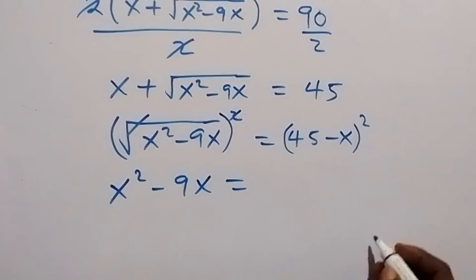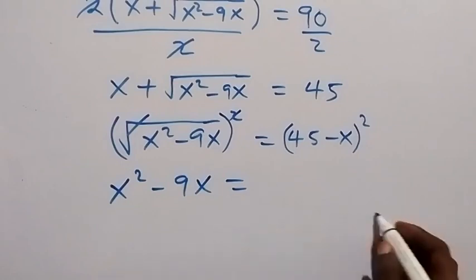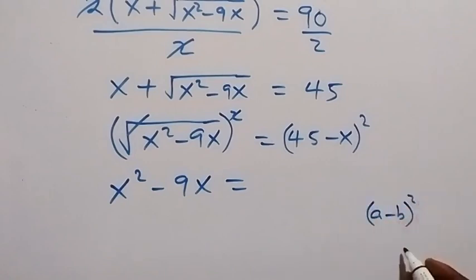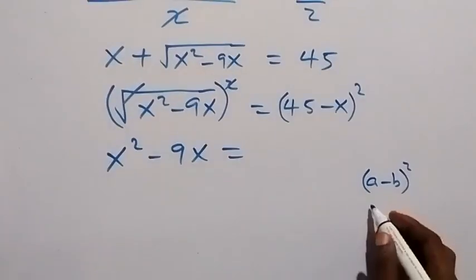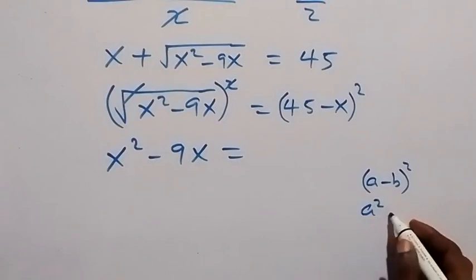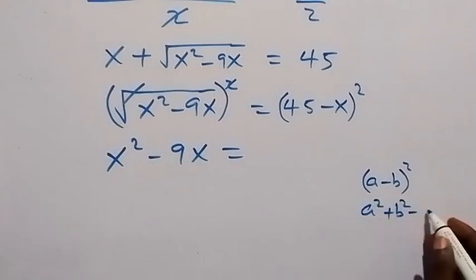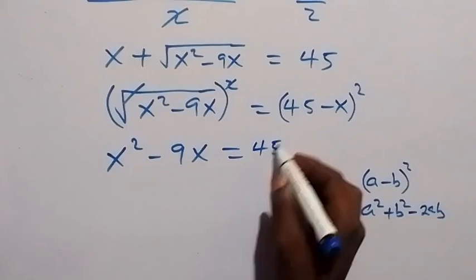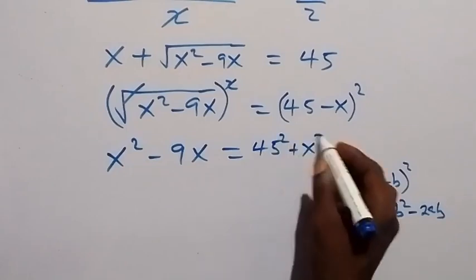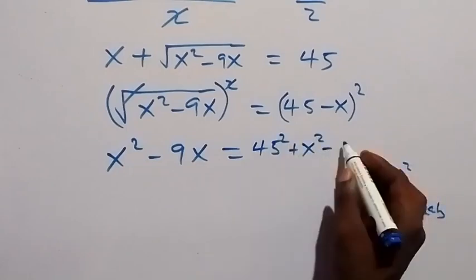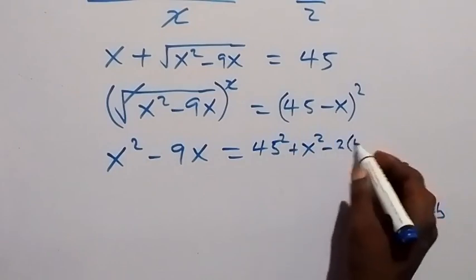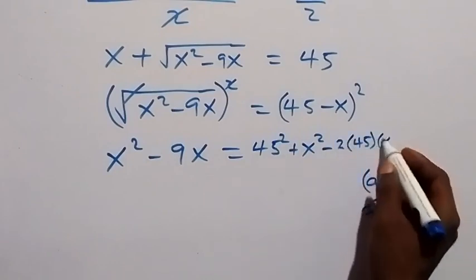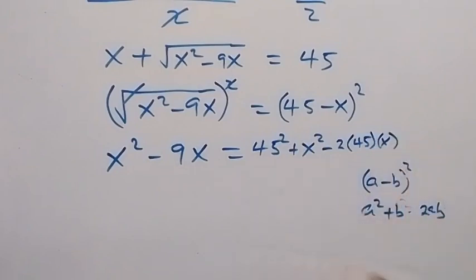The pattern here for a minus b squared is a squared plus b squared minus 2ab. Applying this, we have 45 squared plus x squared minus 2 times 45 times x, giving us x squared minus 9x equals 45 squared plus x squared minus 90x.